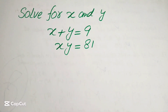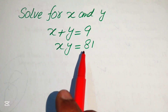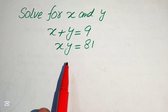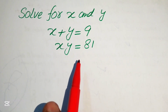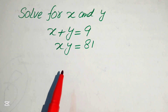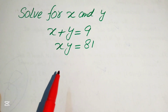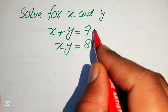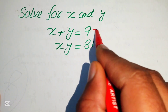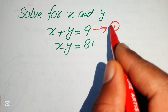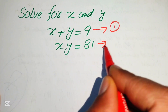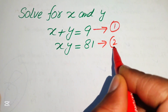Hello everyone, welcome to solve this nice math algebra problem. Here we have x plus y equals 9, which we call equation 1, and x times y equals 81, which we call equation 2. We will solve this problem for the values of x and y.